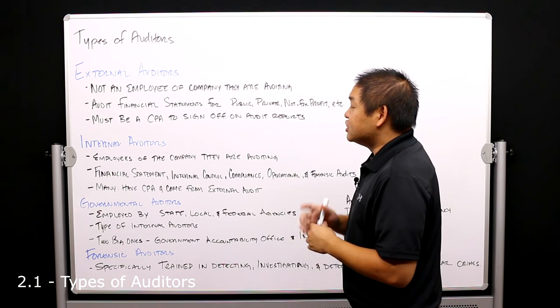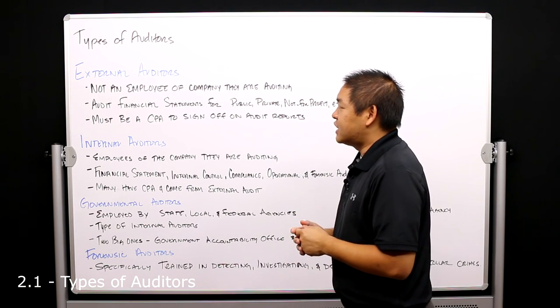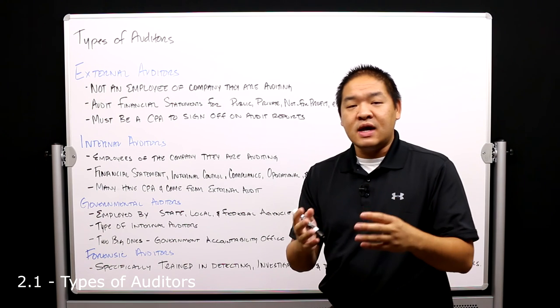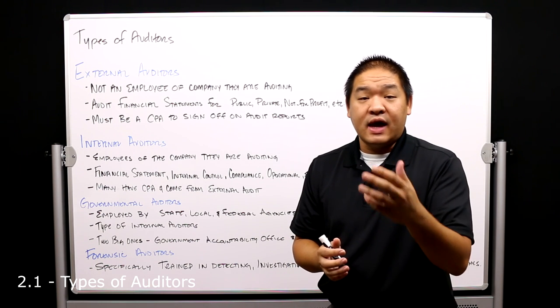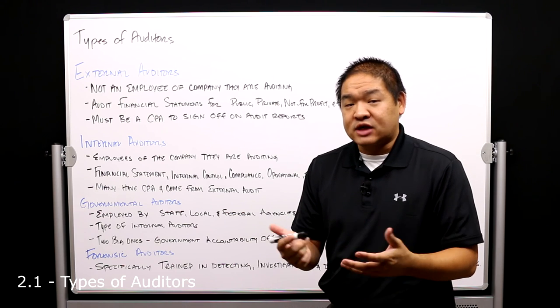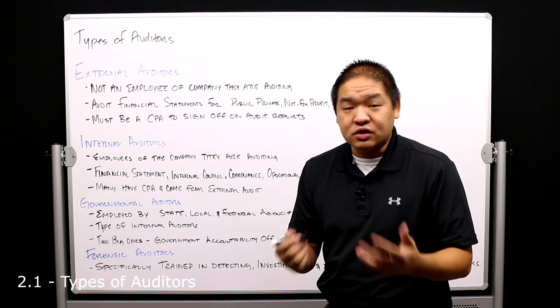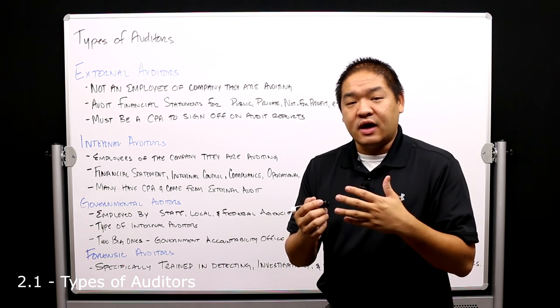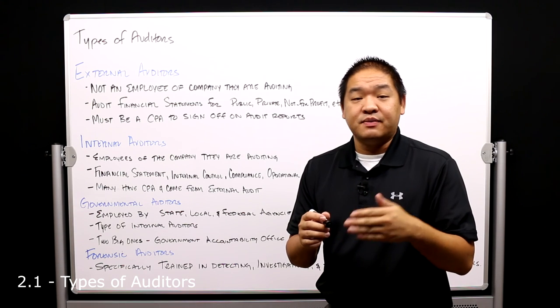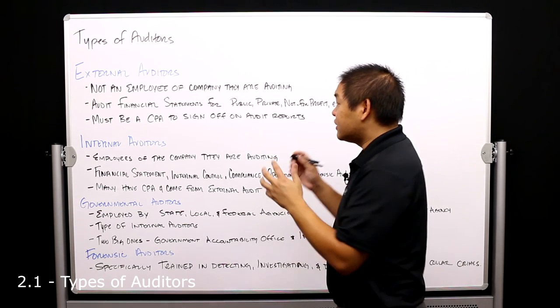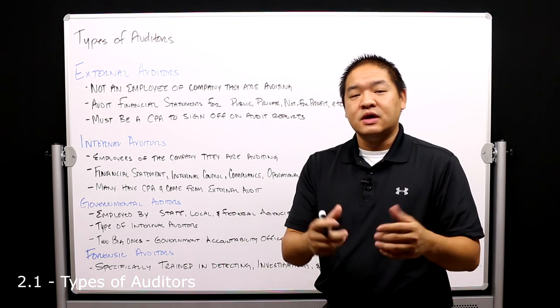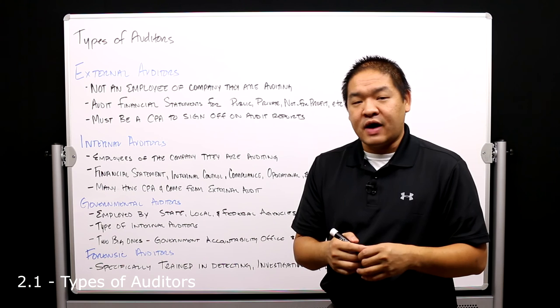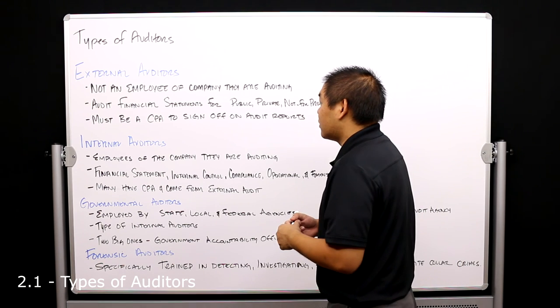Now external auditors aren't just for auditing financial statements, but oftentimes that's the main service that they provide their clients. They can provide other things like tax work, consulting work, depending if they are going to violate the independence rule, which we'll talk about later. But generally speaking, external auditors audit financial statements—that's their number one job and the number one service they provide to clients in their organization.